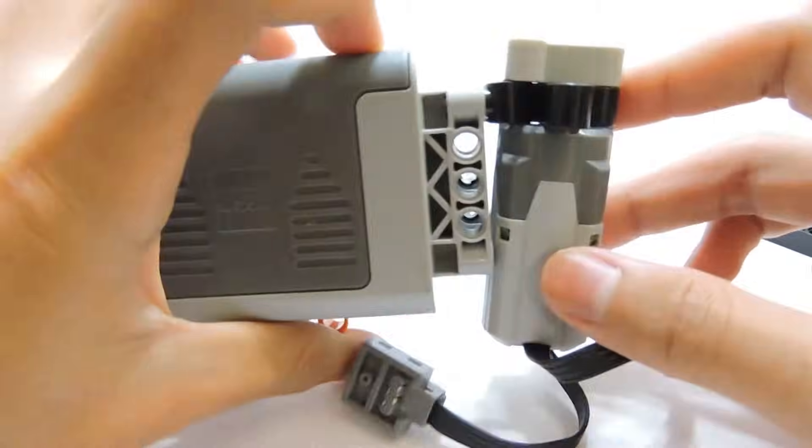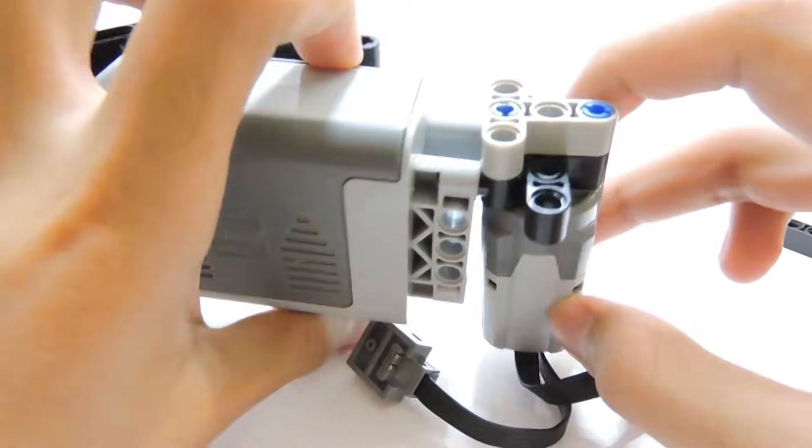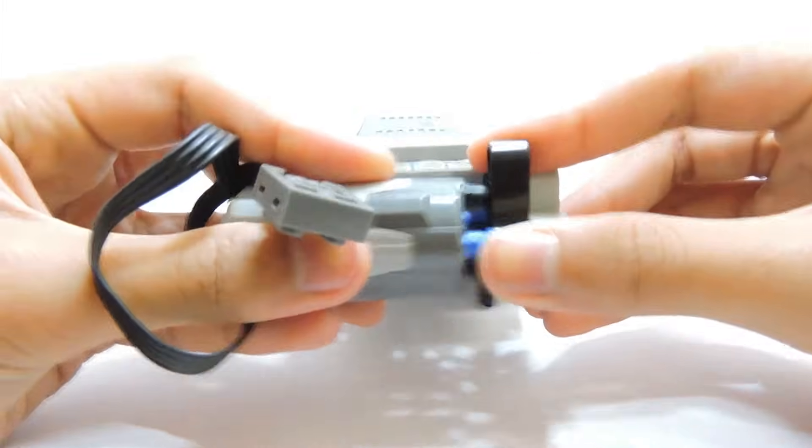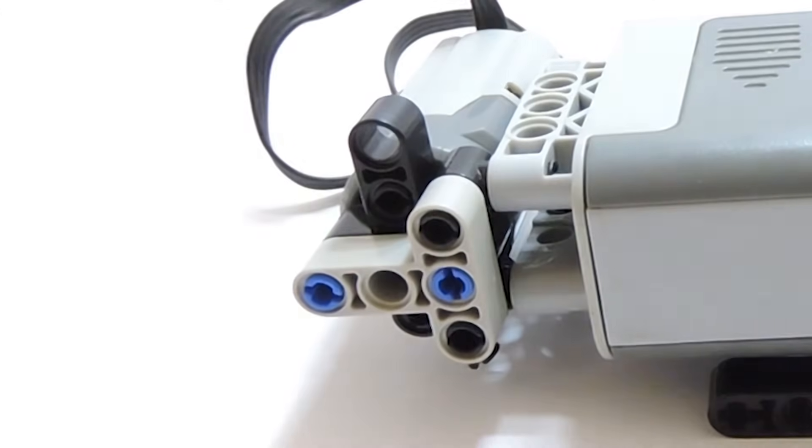Once this assembly is complete, we want to attach it like this to the battery box. I did it by first attaching the assembly and the motor last. It should look something like this.